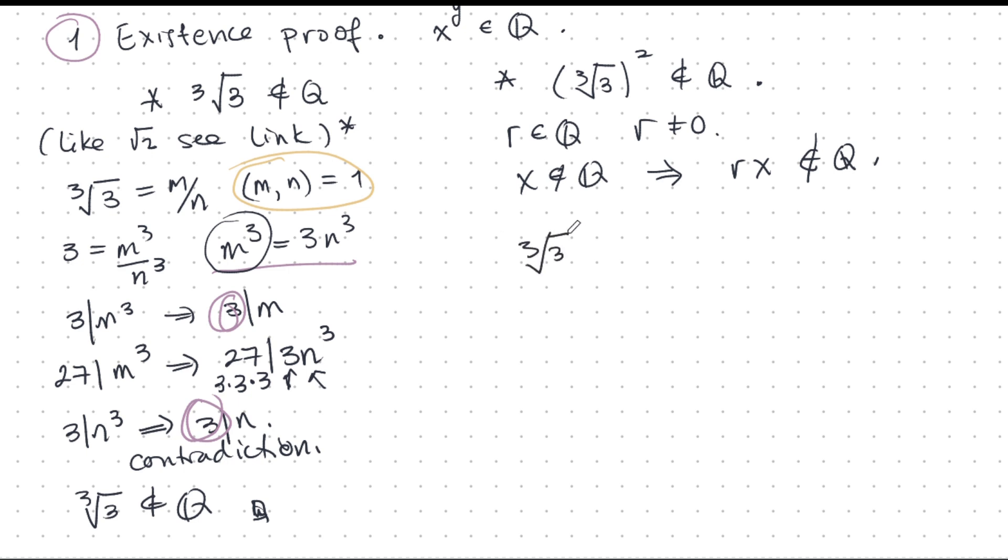So we can now put this together. Cube root of 3 squared times cube root of 3, this is 3. This is actually rational, of course. And we just proved that this here is irrational.